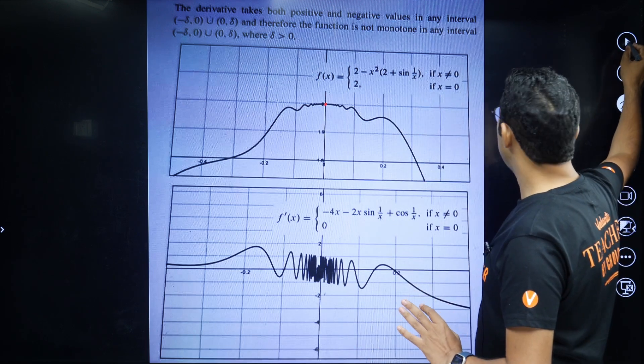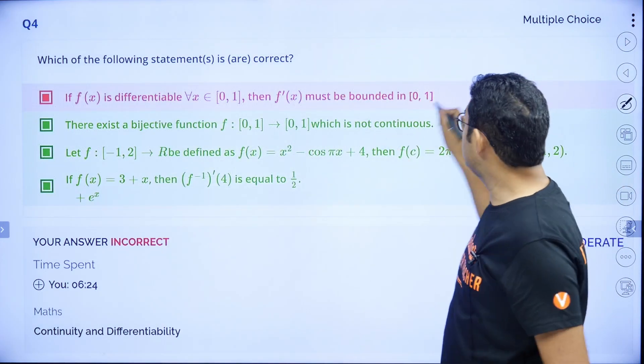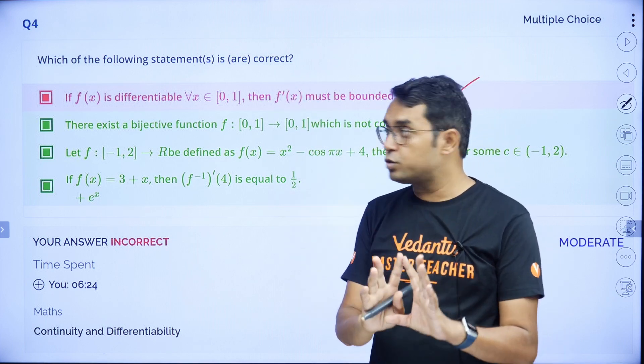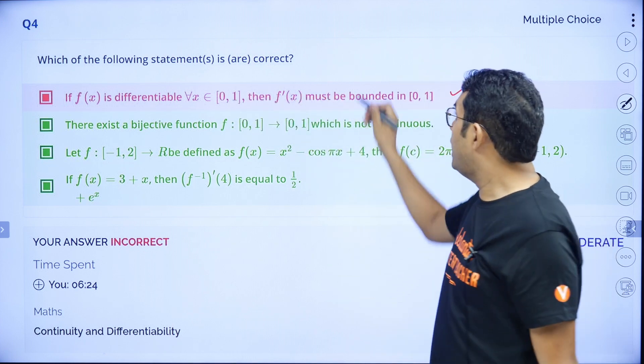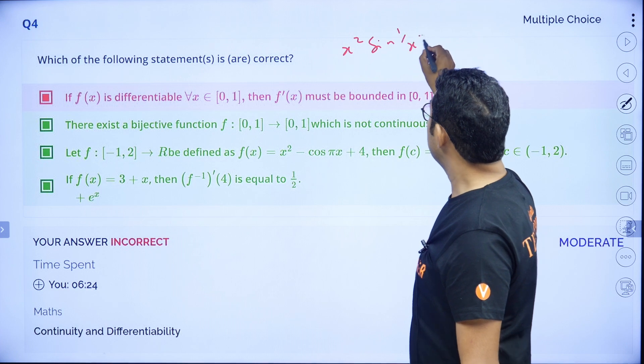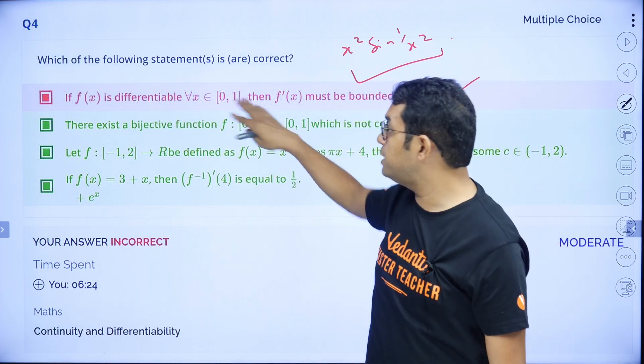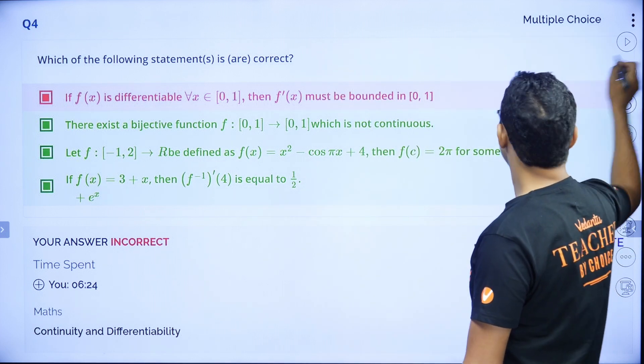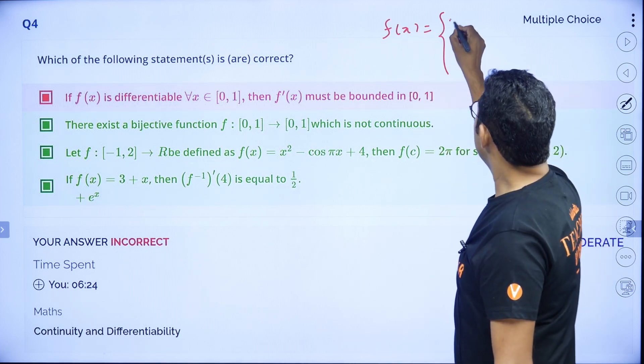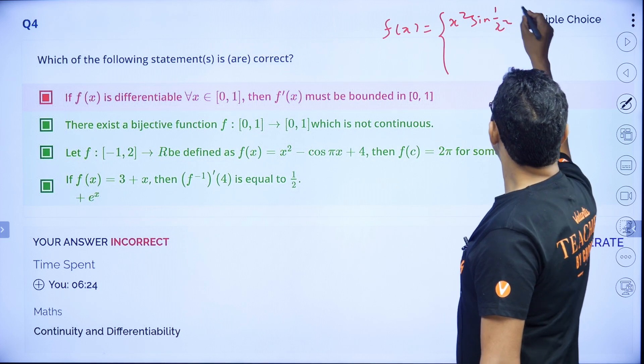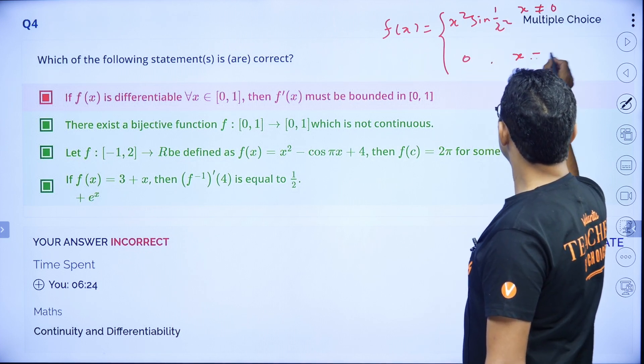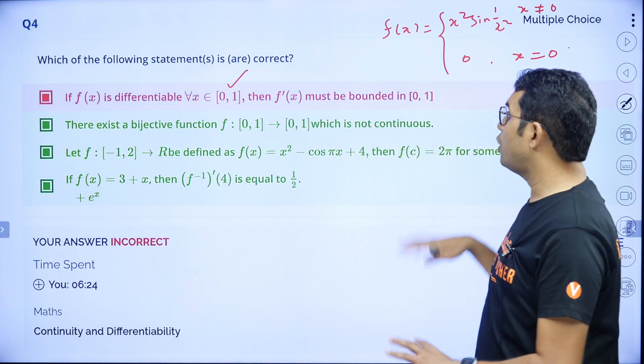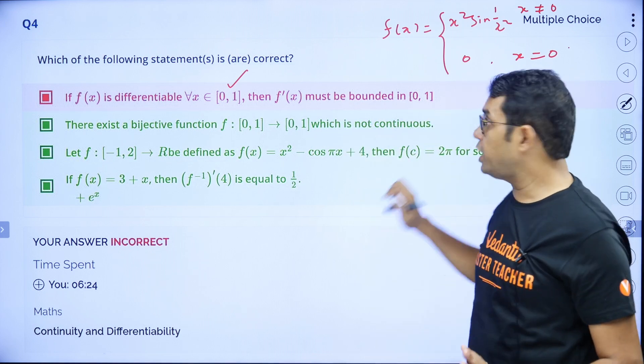I have given you one more question here. This actually was the question of Vedantu test that was conducted in March. This option one only, please go through it. Here it looks like this option is correct, which is not. I am giving you just example x square sine 1 upon x square. Try to do it yourself and see that why a function is differentiable on 0 to 1. Actually this function is f x equal to x square into sine 1 upon x square for x not equal to 0 and 0 for x equal to 0. So for this example, please see why a function is differentiable on closed interval 0 to 1, but still it is not bounded. It says must be bounded, but it is not. You can check for with this example.